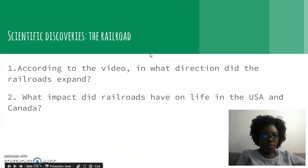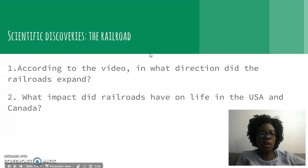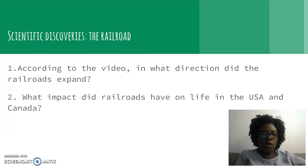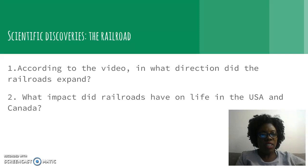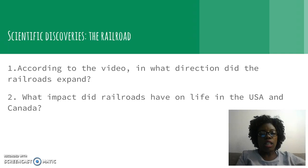After you do that, you're going to watch a video titled The Railroad, and the link to this video is located inside the module in your Canvas. All you have to do is click the link, and then you're going to take notes in your ISN on page 22. Title your notes Scientific Discoveries: The Railroad. Go ahead and press pause if you need to get your ISN out and update your table of contents.